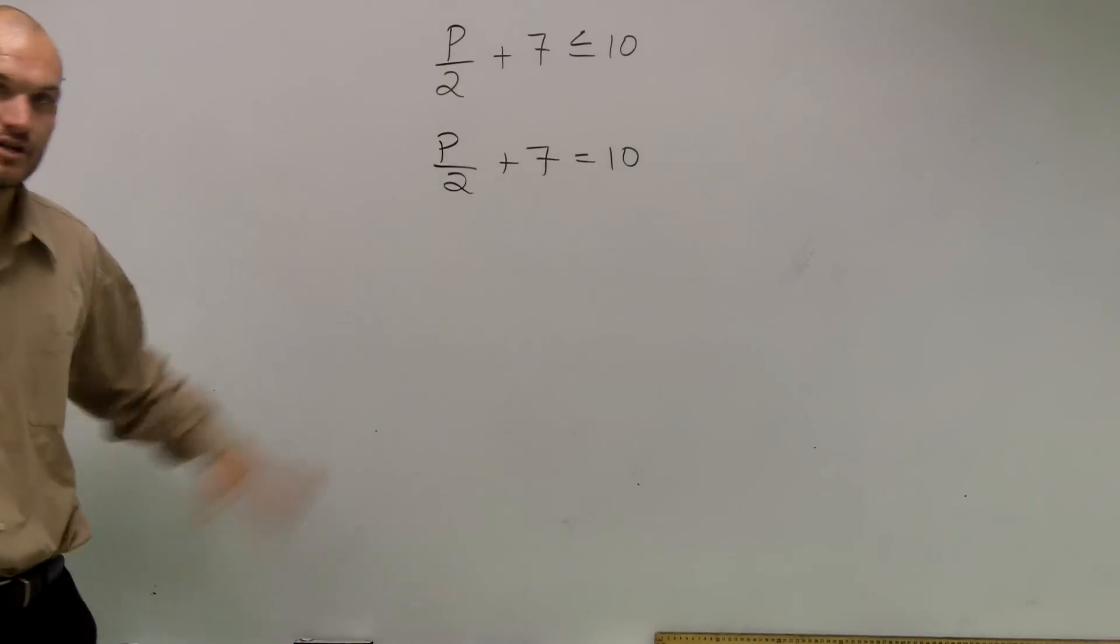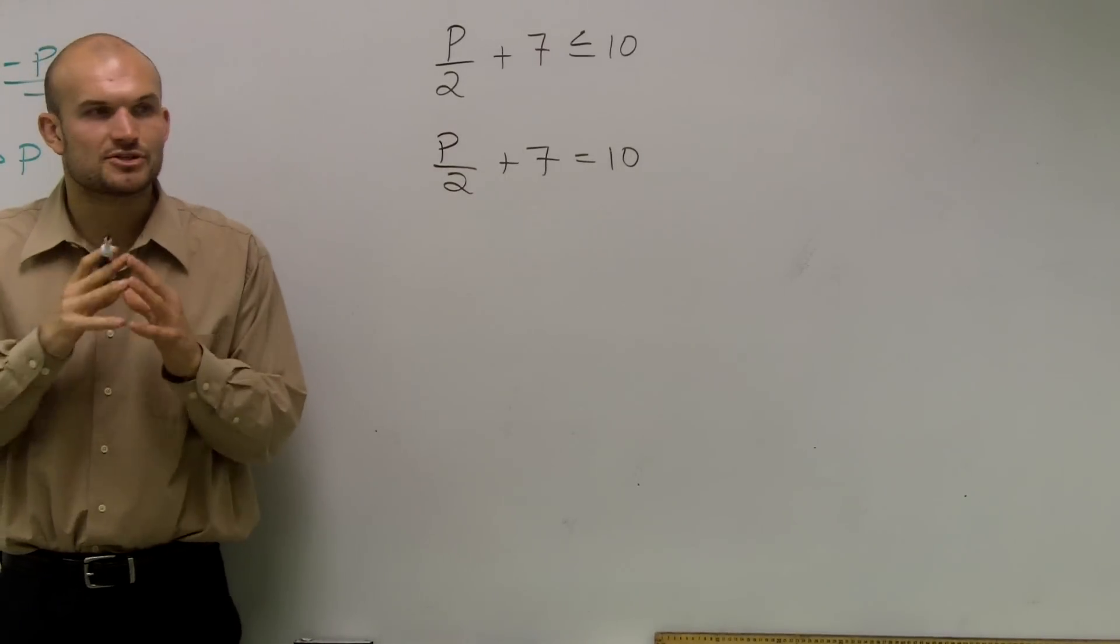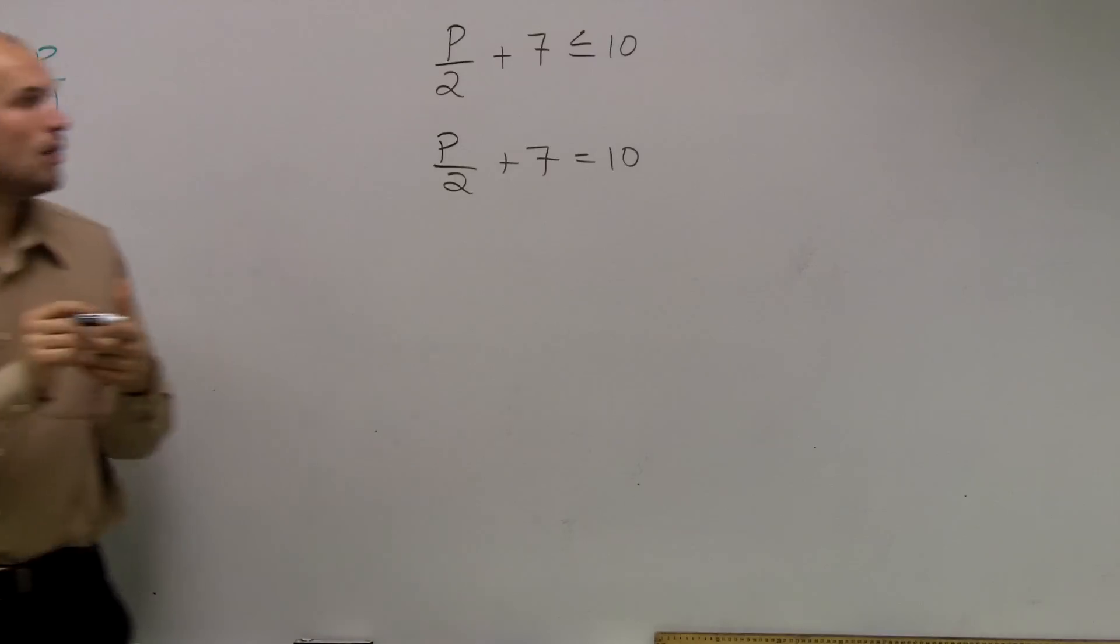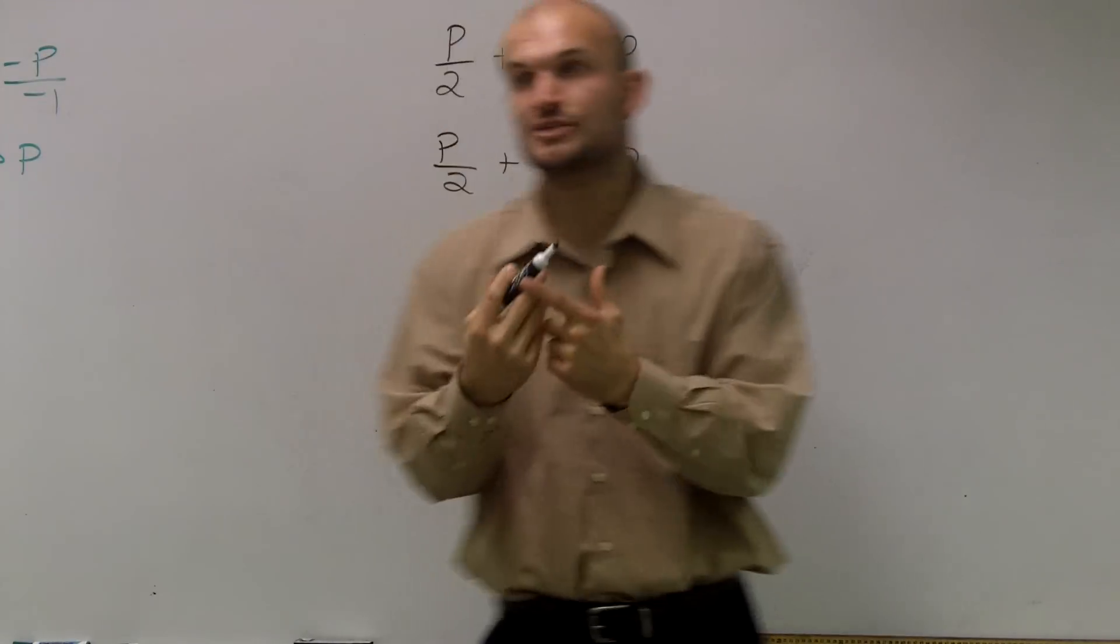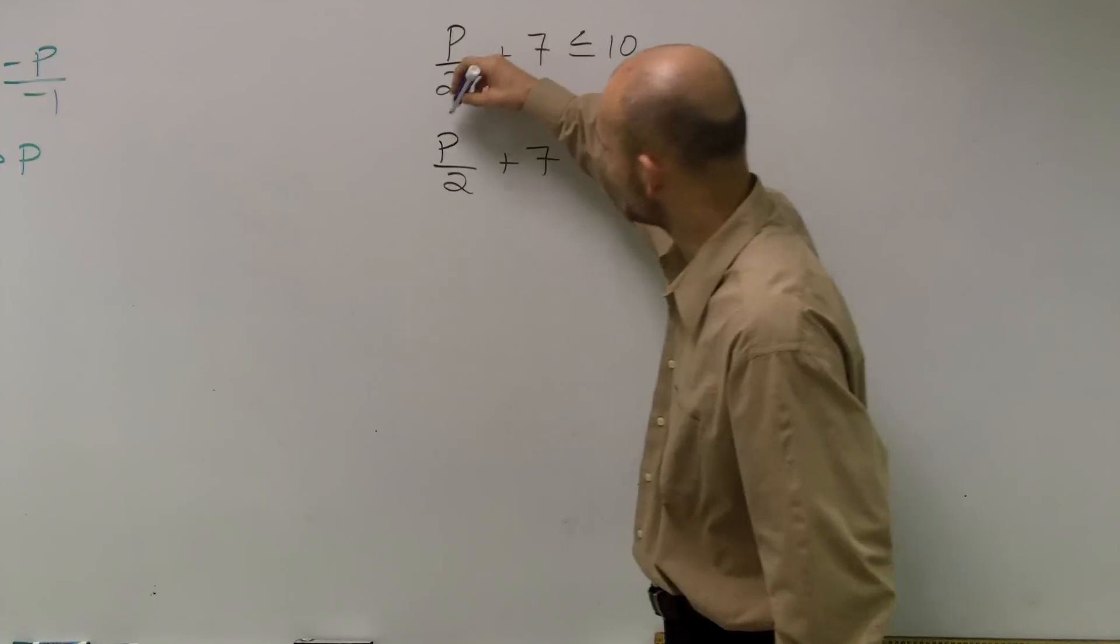Now, I know it's been a while since we learned how to solve two-step equations. But remember, two-step equations, we follow very important rules. The first thing to do is to always undo what's happening to your variable. So we need to figure out what's our variable. Well, our variable is p.